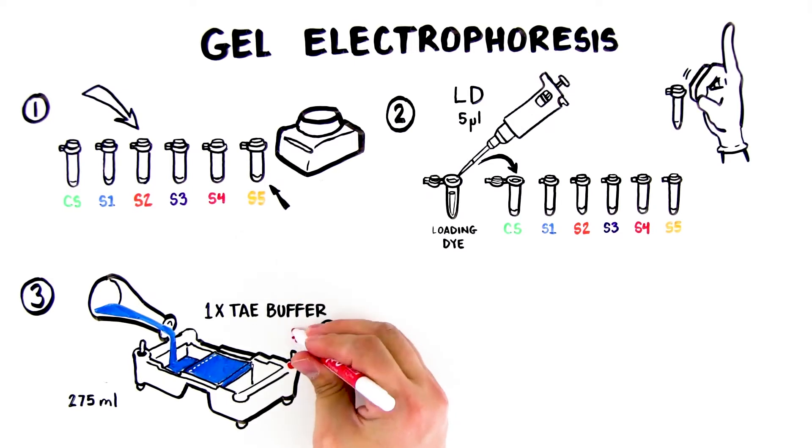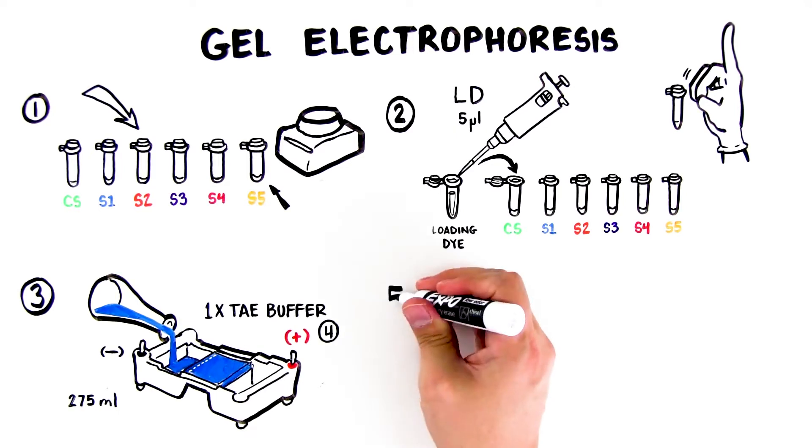Fourth, check that the wells of the agarose gels are near the black, negative electrode, and the base of the gel is near the red, positive electrode.